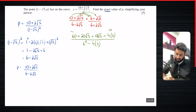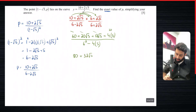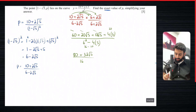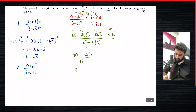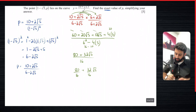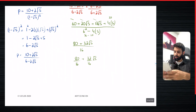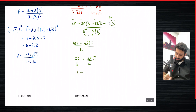So 60 plus 20 gives 80, and 20 root 5 plus 12 root 5 gives 32 root 5 in the numerator. The denominator is 36 minus 20 which equals 16. Now 80, 32, and 16 are all multiples of 16, so we simplify: 80 over 16 is 5 and 32 over 16 is 2, giving p equals 5 plus 2 root 5.